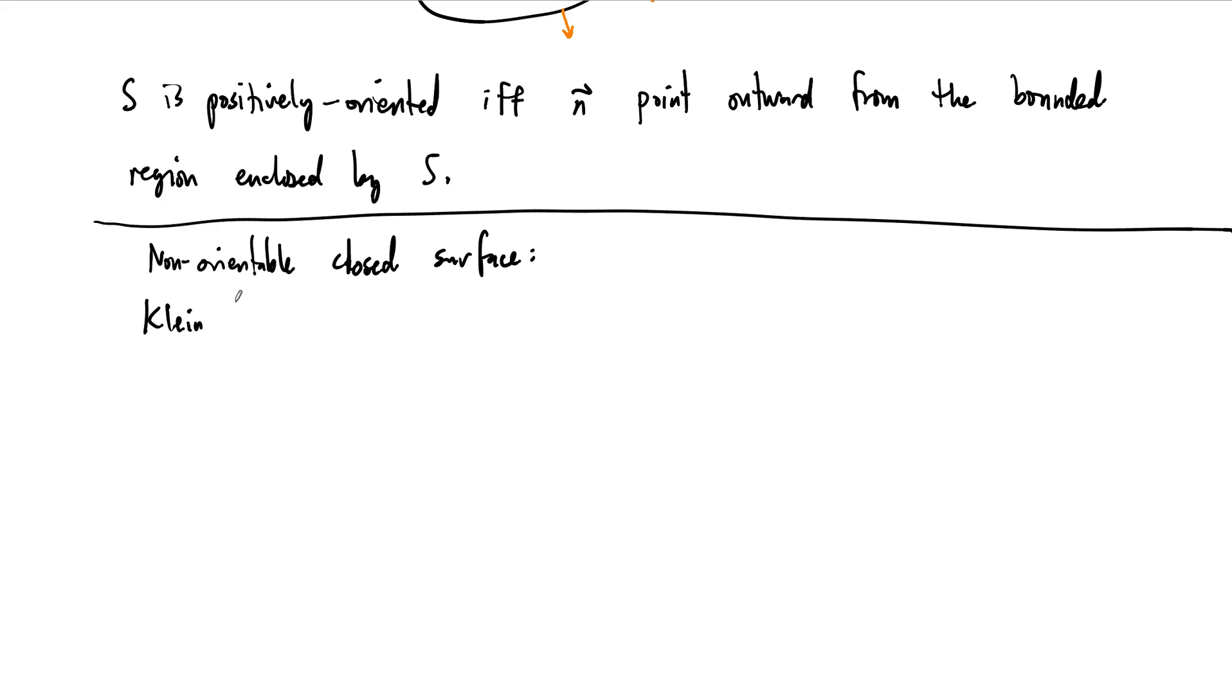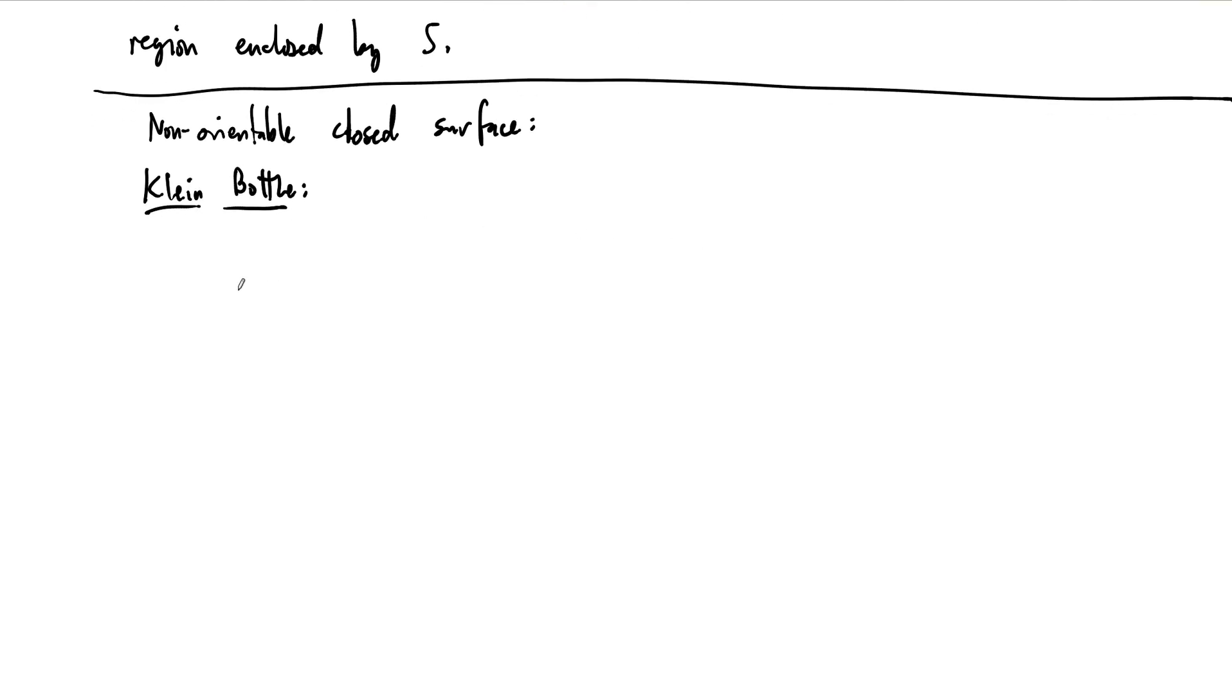The Klein bottle is constructed out of a rectangle as follows. So first you take these two edges just the way we did and you glue them together to form a Möbius strip. At this point you end up with our beautiful picture of our Möbius strip, and we can put the red gluing portion right there.